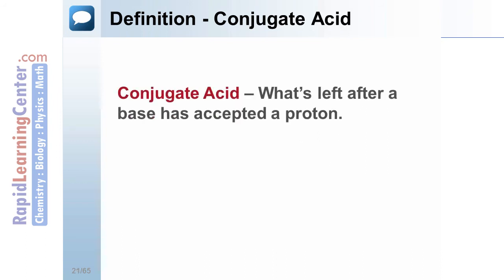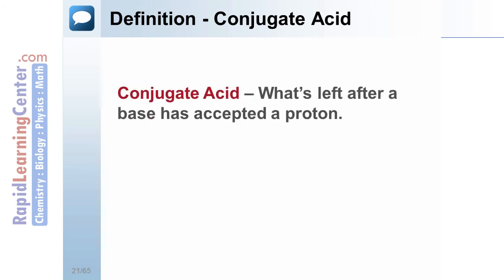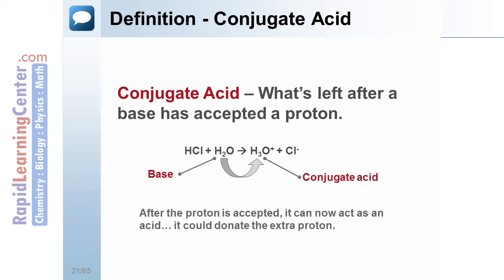A conjugate acid is what's present after the base has accepted the proton. In this example, the water acts as the base. It accepts the proton and becomes H3O plus 1, which is now called the conjugate acid. It's referred to as an acid because now that it has accepted the proton, it can then donate it to another molecule.